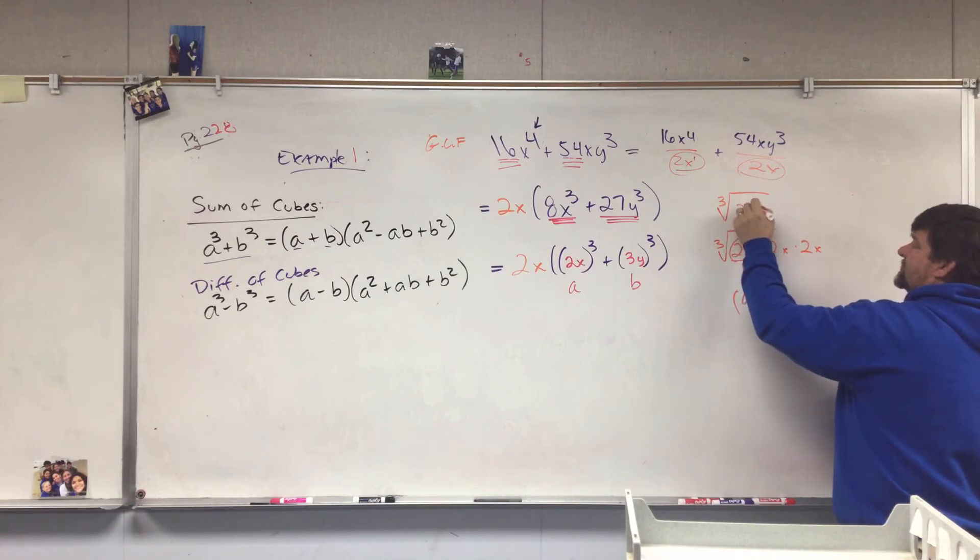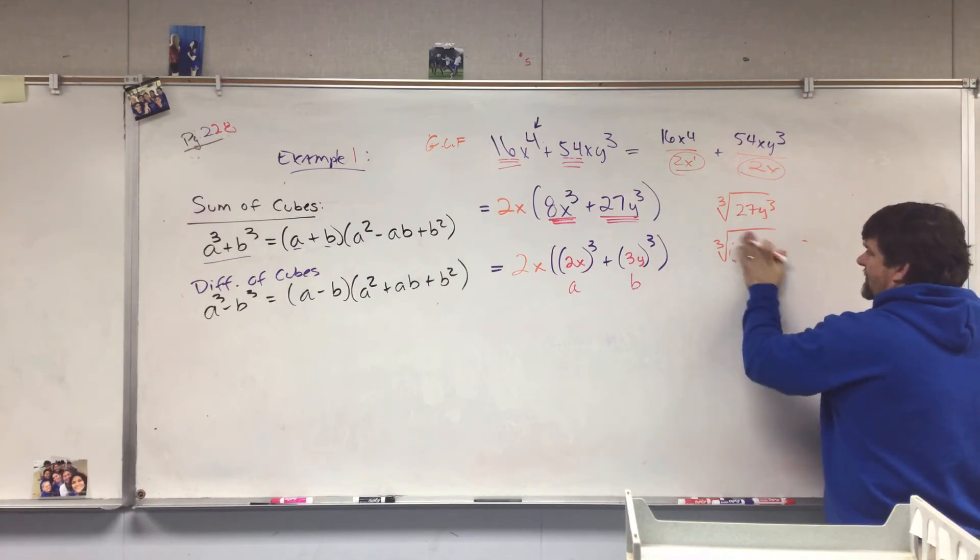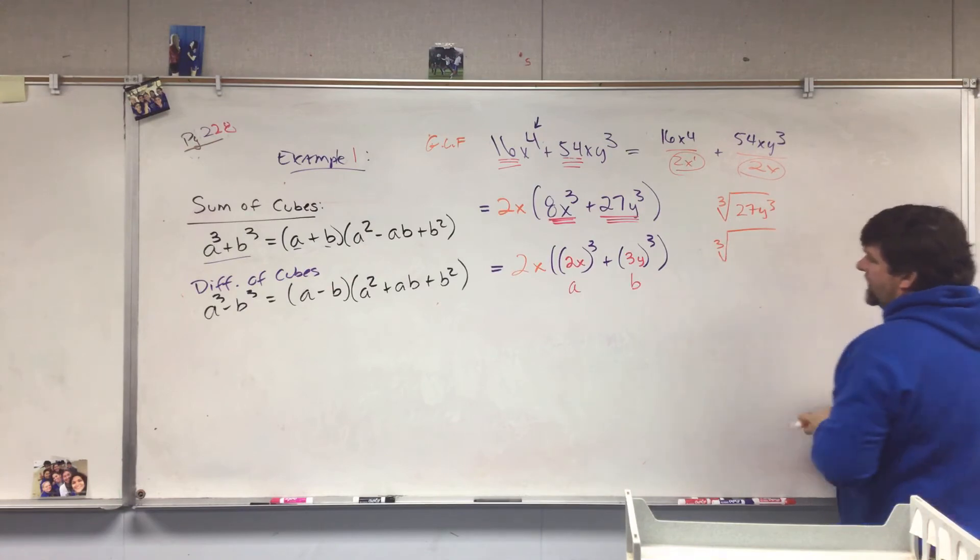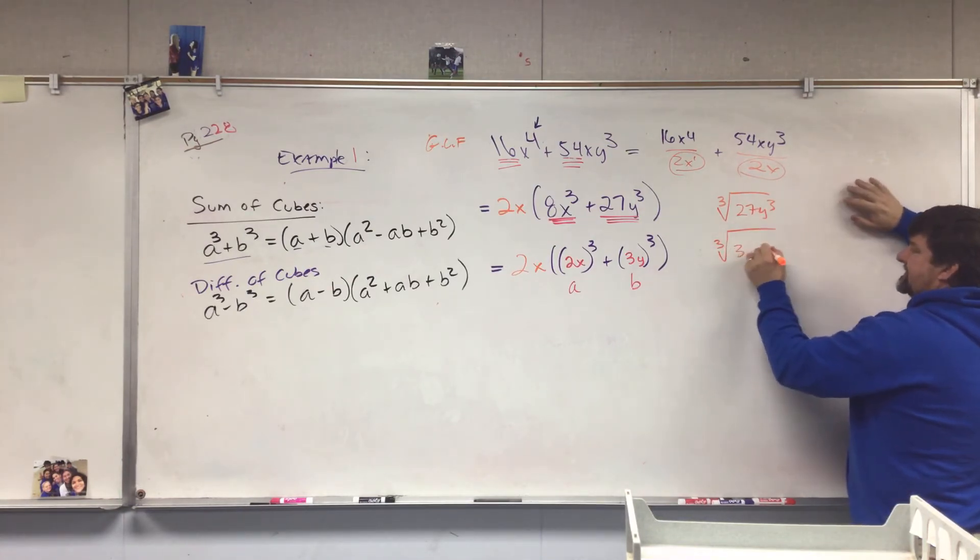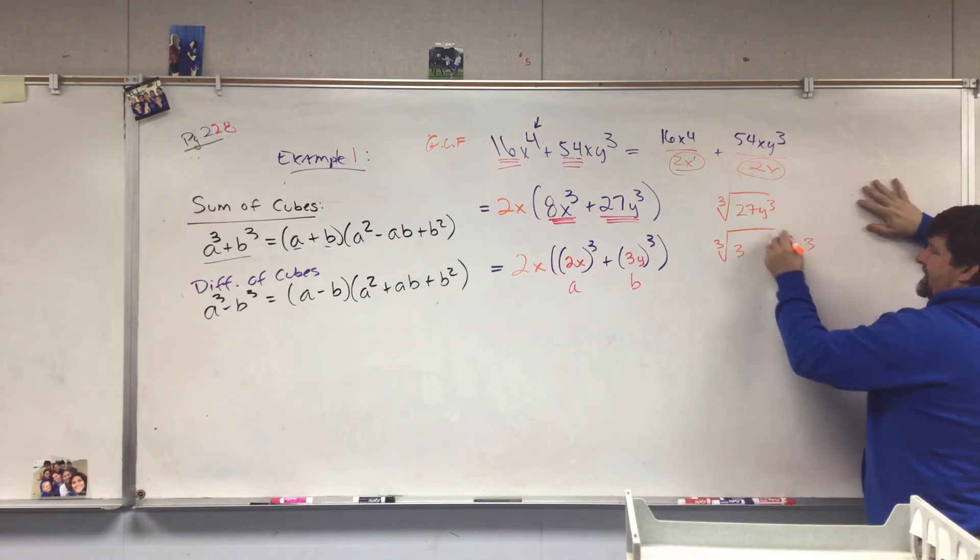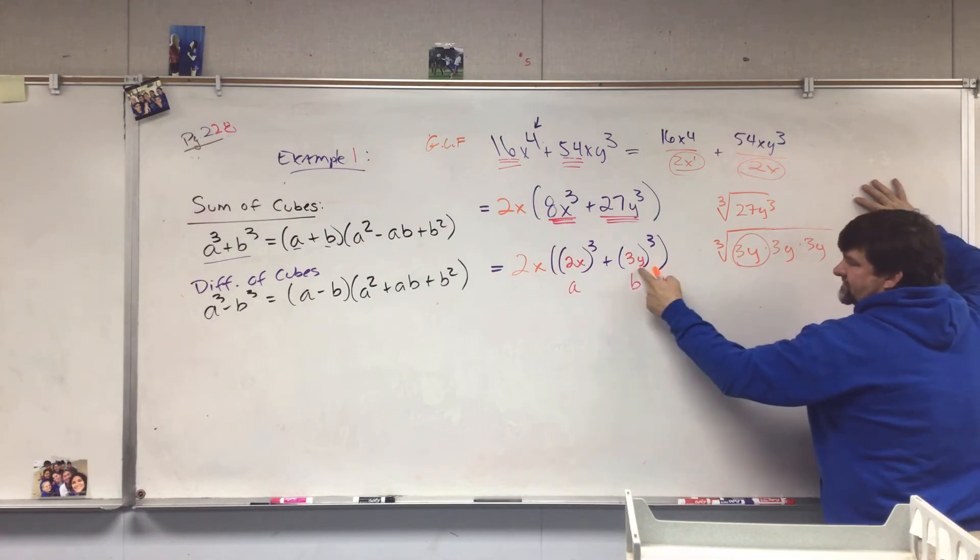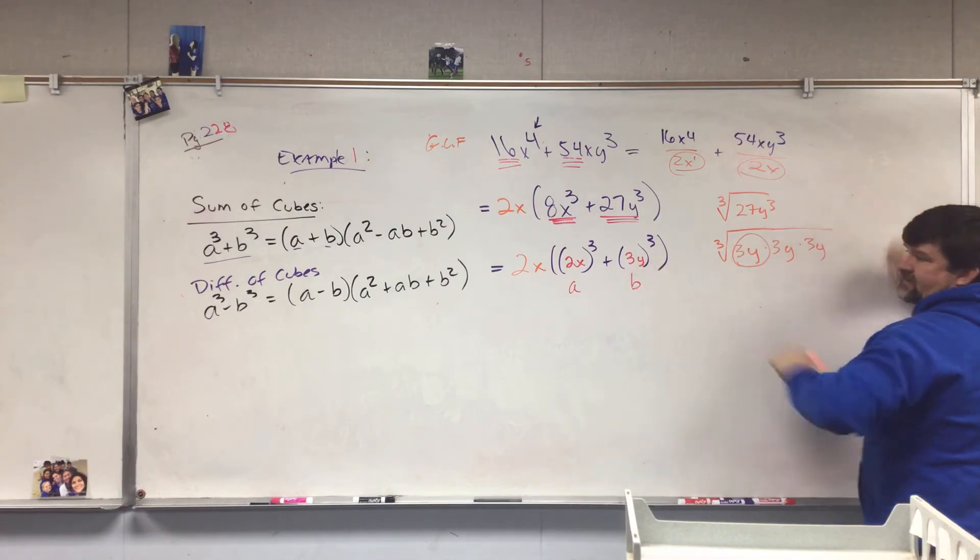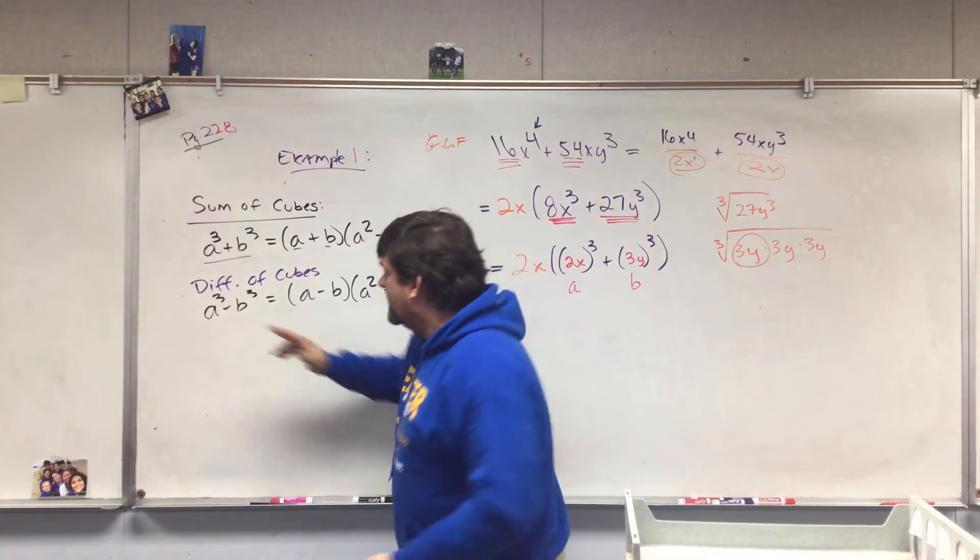Well if I throw 27Y³ in there, we know that 3 × 3 × 3 and Y × Y × Y, so b becomes 3Y. Okay, so that's the way we get it in this formula right here.